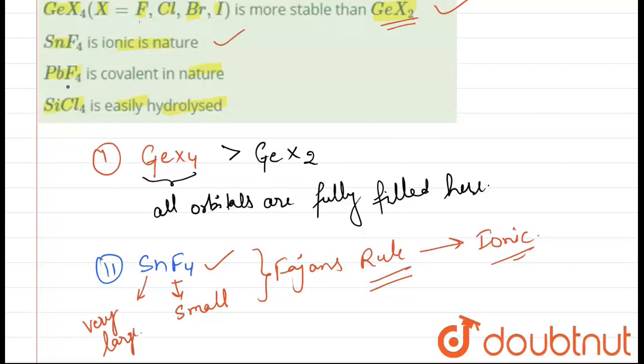Now coming to our third statement, it is saying PbF4 is covalent in nature. Well, this statement is itself not correct. The reason being, because Pb atom is very similar concept here. Pb is very large and F is small, F is very small. So according to Fajan's rule, PbF4 is not covalent. So this statement is not correct.